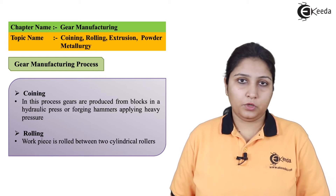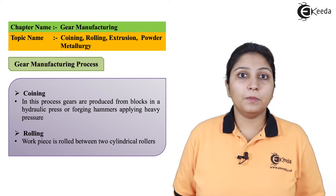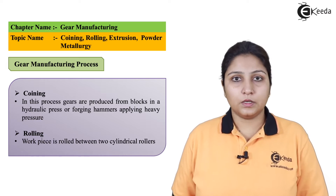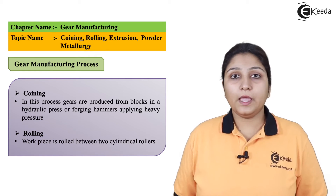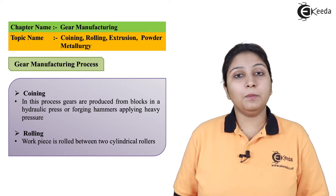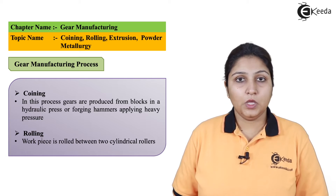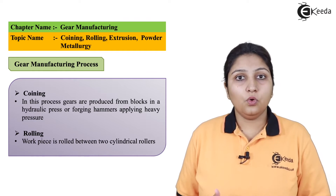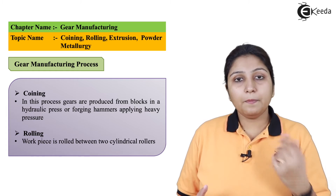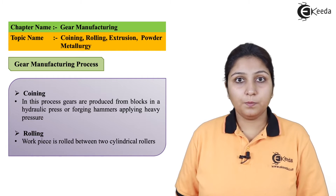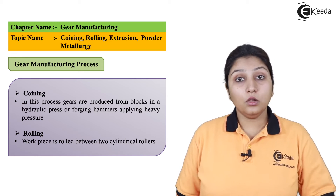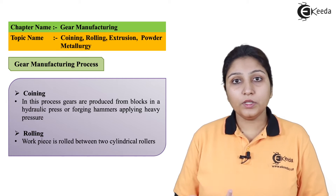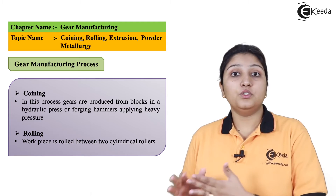The first example is the coining process. In coining, a press tool operation is used. A press and a die are required, both having the shape of the gear to be produced, and the material is kept between them. During the press process, the shape is impressed on the work piece and your part is produced. In coining, you can also do a hammering process. This is the basic coining process in which you get shape by using a press tool operation.